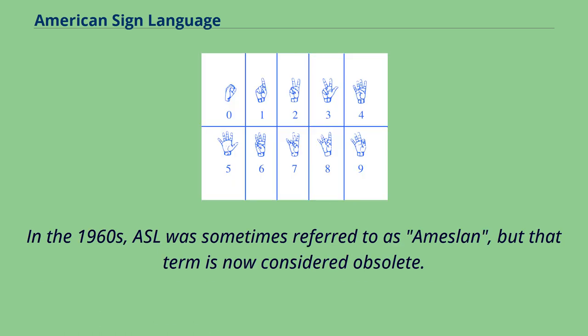In the 1960s, ASL was sometimes referred to as a measlen, but that term is now considered obsolete.